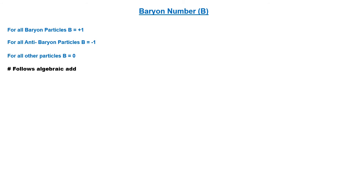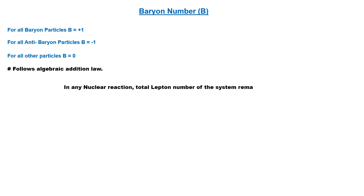Baryon number follows the algebraic addition law. According to baryon number conservation, the baryon number should be conserved in any nuclear reaction. If parent particles decay into daughter particles, the total baryon number of the parent particles should be equal to the total baryon number of the daughter particles.